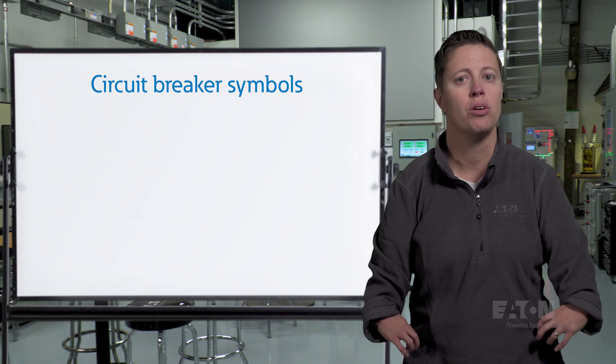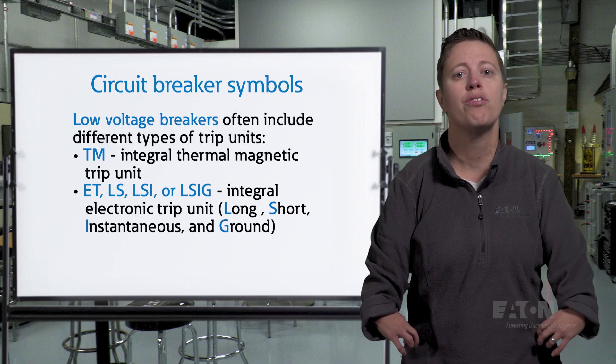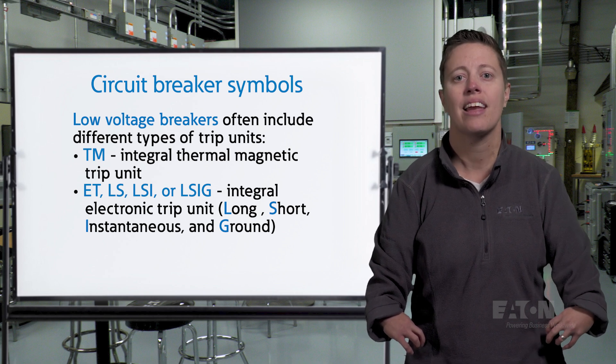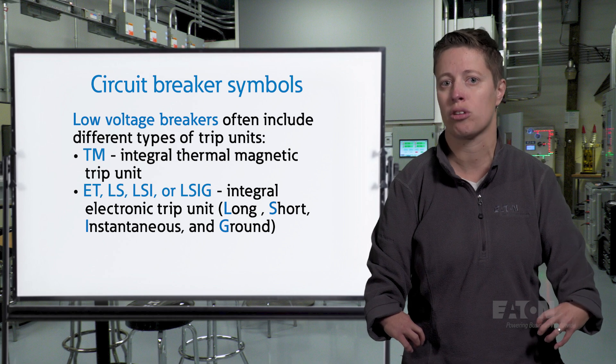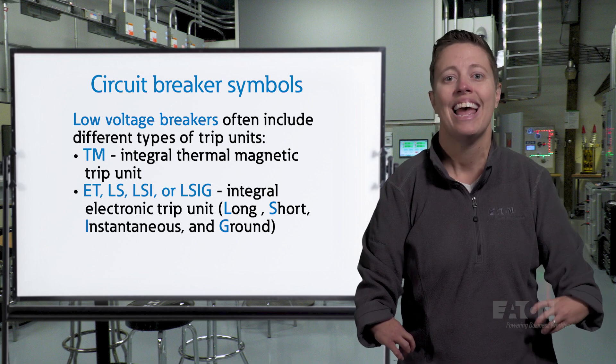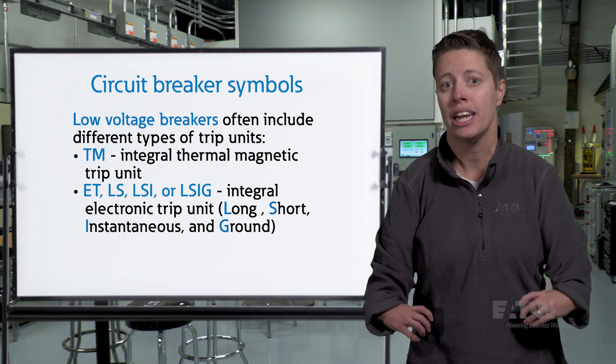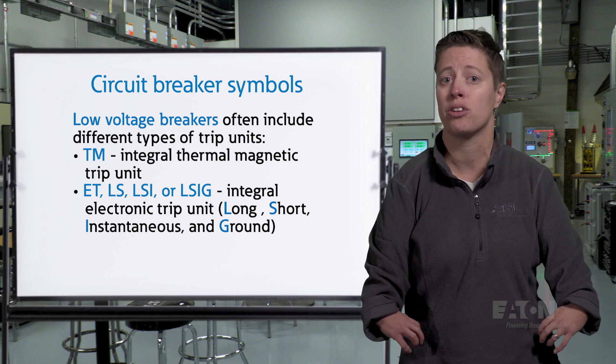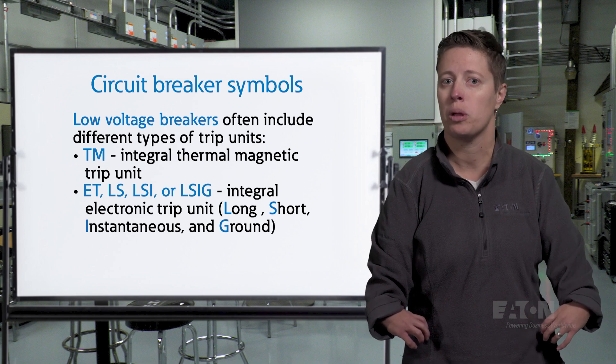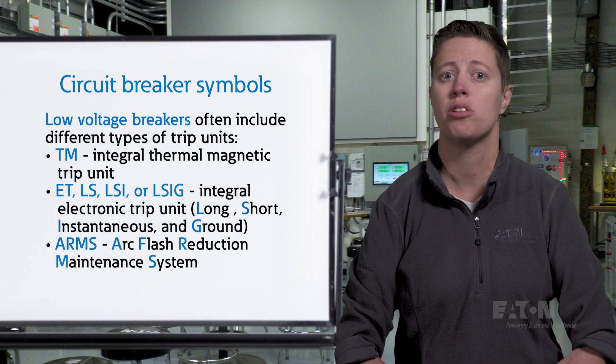Circuit breaker symbols often include a lot of additional notes and abbreviations that describe how the breaker operates. Low voltage breakers include integral trip units in one of several types. TM indicates the breaker has an integral thermomagnetic trip unit. ET, LS, LSI, or LSIG indicate the breaker has an integral electronic trip unit. The L, S, I, and G refer to the types of protection provided by the trip unit: long, short, instantaneous, and ground. Not every electronic trip unit provides every type of protection. The circuit breaker may also note ARMS protection is to be included.